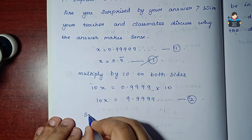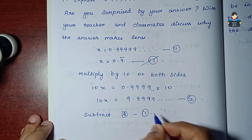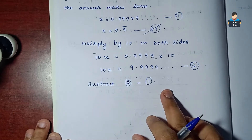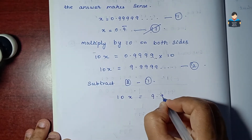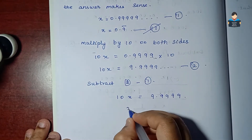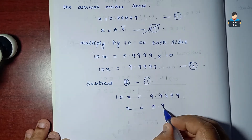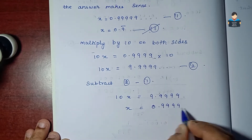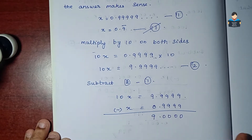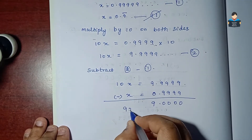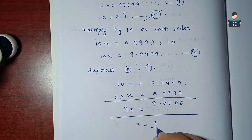Now subtract equation 1 from equation 2. We have 10x equals 9.9999... minus x equals 0.9999... Here we subtract the digits, giving us 9x equals 9.